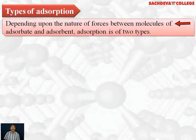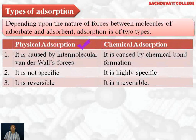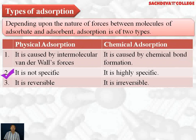Types of adsorption: depending upon the nature of forces between molecules of adsorbate and adsorbent, adsorption is of two types — physical adsorption and chemical adsorption. Physical adsorption is caused by intermolecular van der Waals forces of attraction, which are quite weak. In chemical adsorption, it is caused by chemical bond formation, which is quite strong. Physical adsorption is not specific — each and every gas will adsorb on the adsorbent to some extent. Chemical adsorption is highly specific.